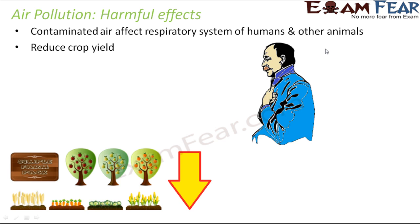The second harmful effect is reduced crop yield. If there is air pollution, the entire air is contaminated. Even plants undergo photosynthesis and respiration, so they also exchange gases with their surroundings. If the surrounding air is polluted, the air which the plant takes in is also polluted, so the productivity of the plant will reduce and therefore the crop yield will also decrease.